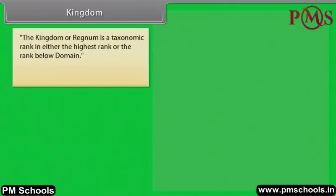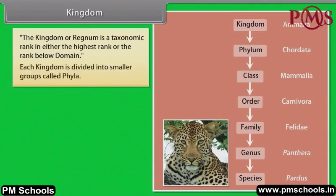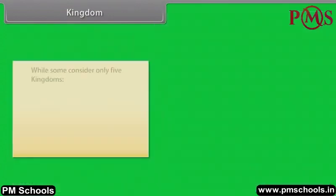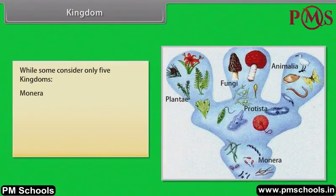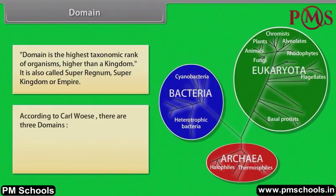The kingdom, or regnum, is a taxonomic rank that is either the highest rank or the rank below domain. Each kingdom is divided into smaller groups called phyla. A system of six kingdoms is: Animalia, Plantae, Fungi, Protista, Archaebacteria, and Bacteria. Some consider only five kingdoms: Monera, Protista, Fungi, Plantae, and Animalia. Domain is the highest taxonomic rank, higher than a kingdom, also called super regnum or super kingdom. According to Carl Woese, there are three domains: Archaea, Bacteria, and Eukaryota.